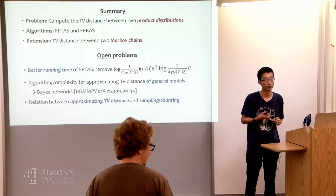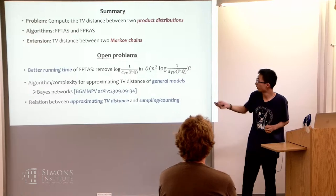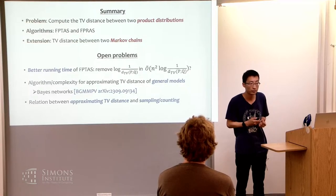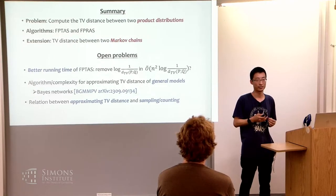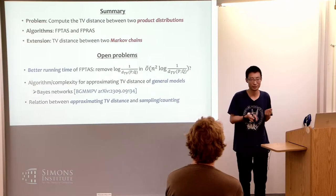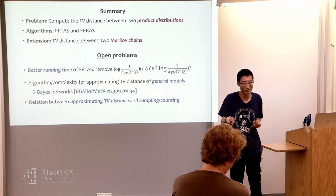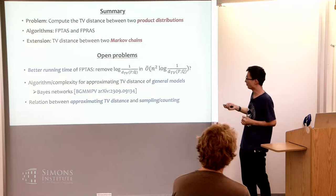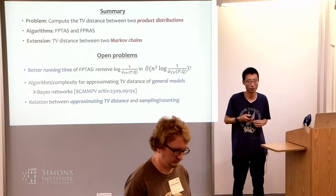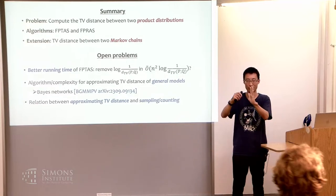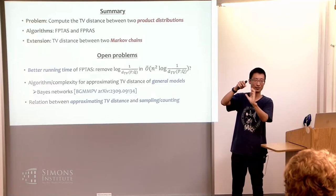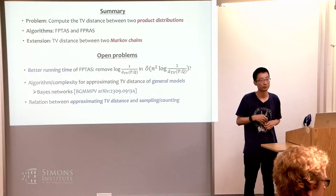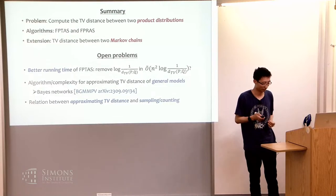Q: Can you hint how to generalize this to Markov chains? A: In Markov chains, you can compute the conditional marginal distribution step by step — conditioning on the value of the previous step, you can compute the marginal distribution of the next step. So instead of maintaining the ratio, we maintain a conditional ratio: the ratio conditioning on one Xi taking a specific value. Then we can merge the conditional ratios — something like a forward algorithm. Thanks.